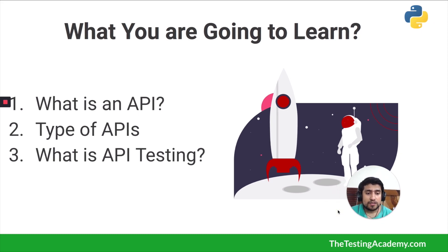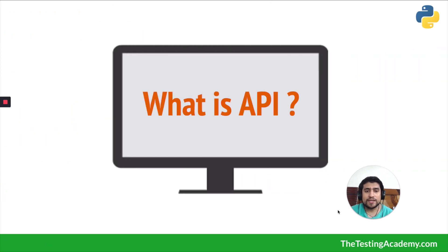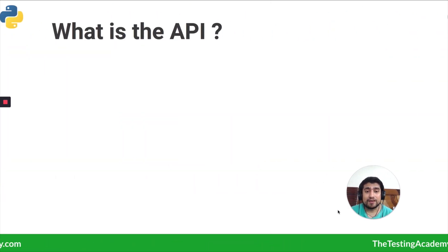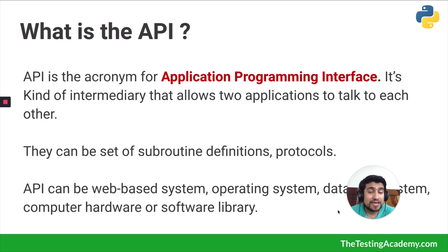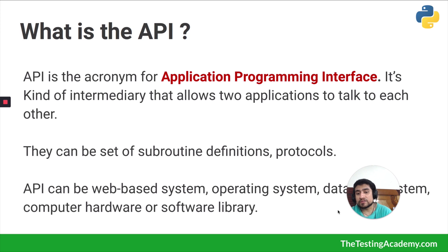So what is an API? API is basically an acronym for Application Programming Interface. It's a kind of intermediary which basically allows two applications to talk with each other. In the previous video we were already talking about web services — API is a part of those web services.